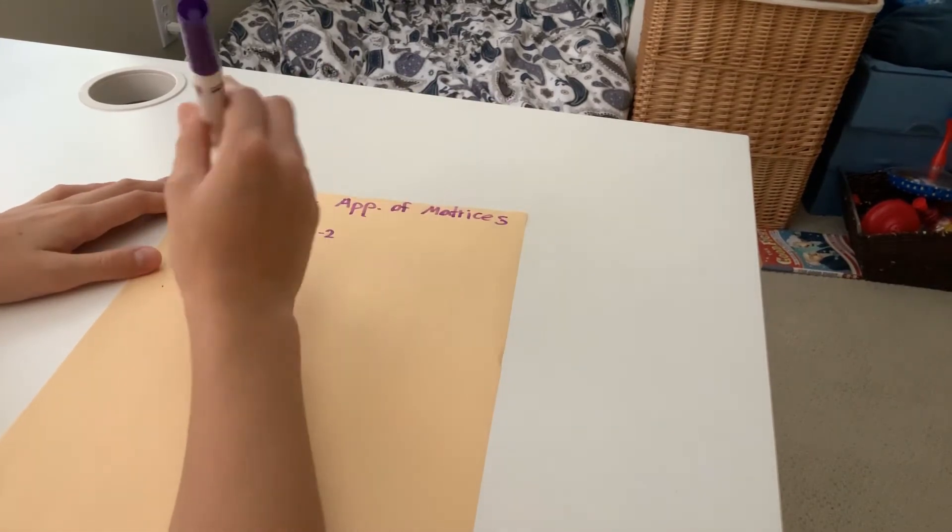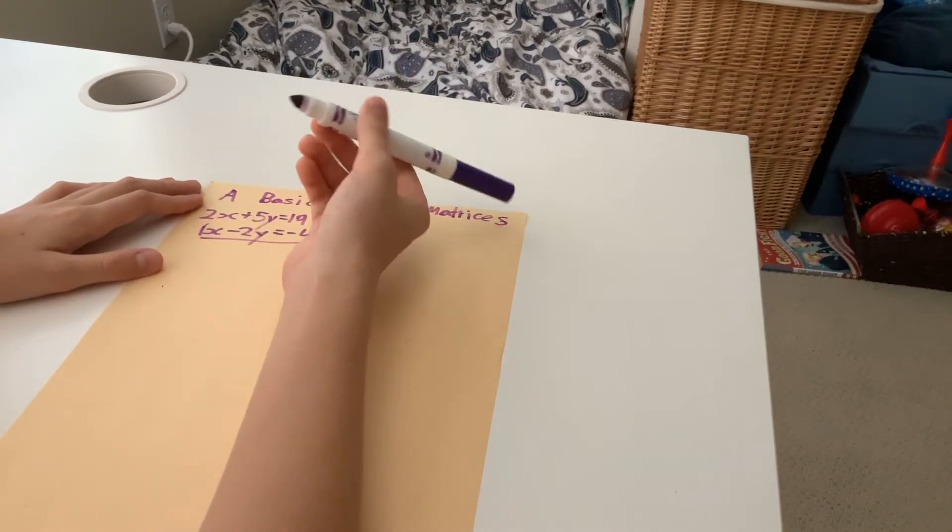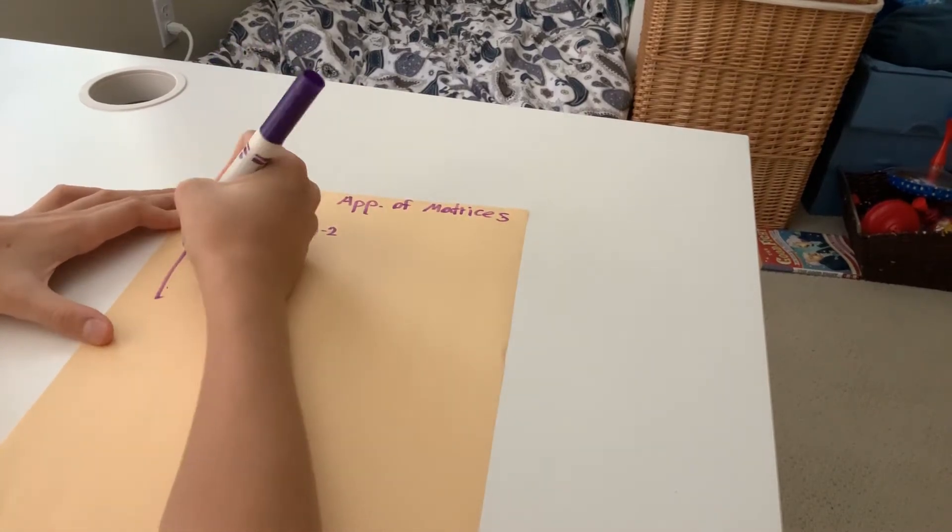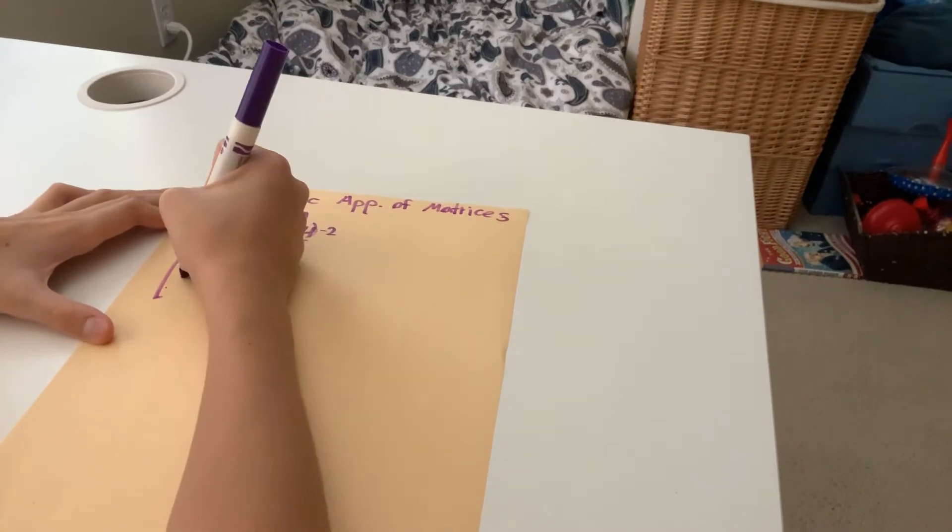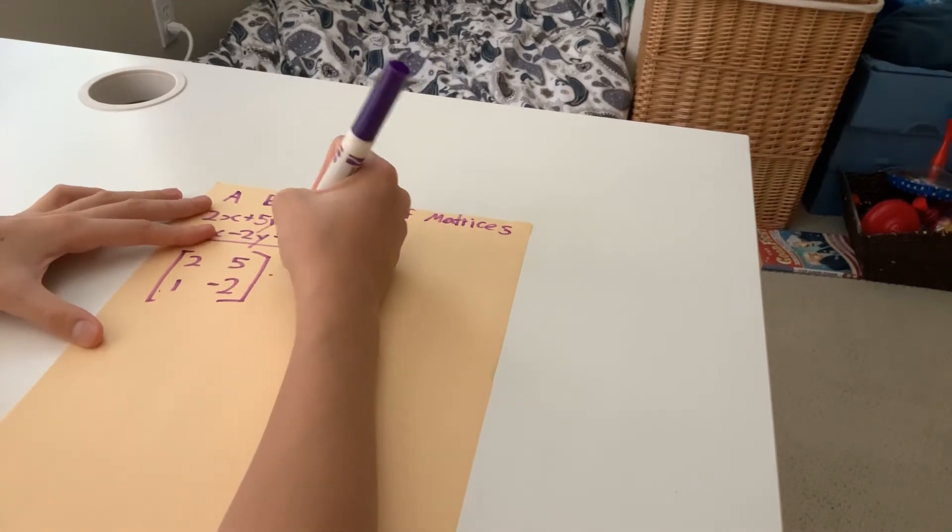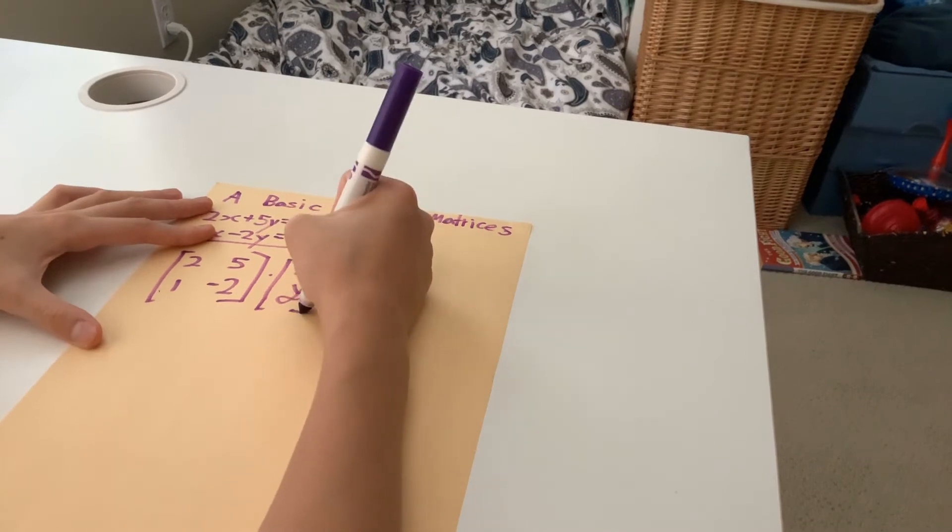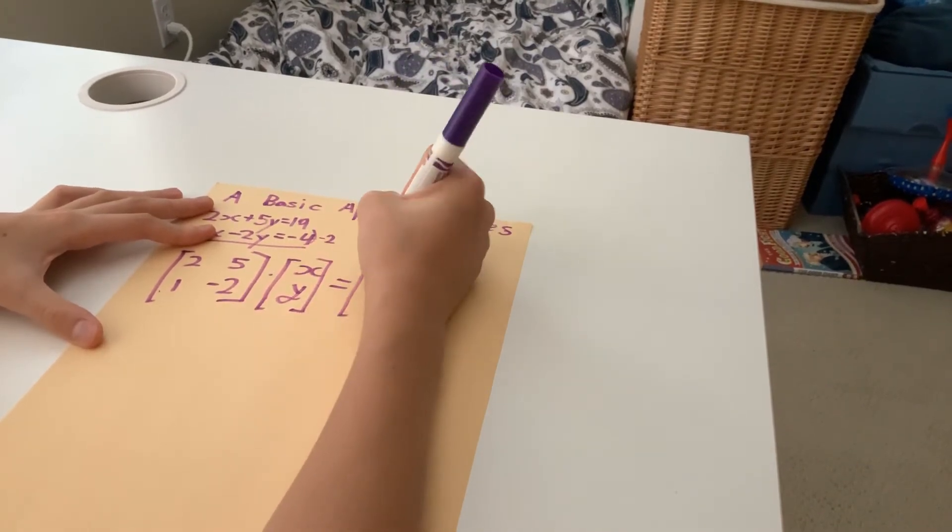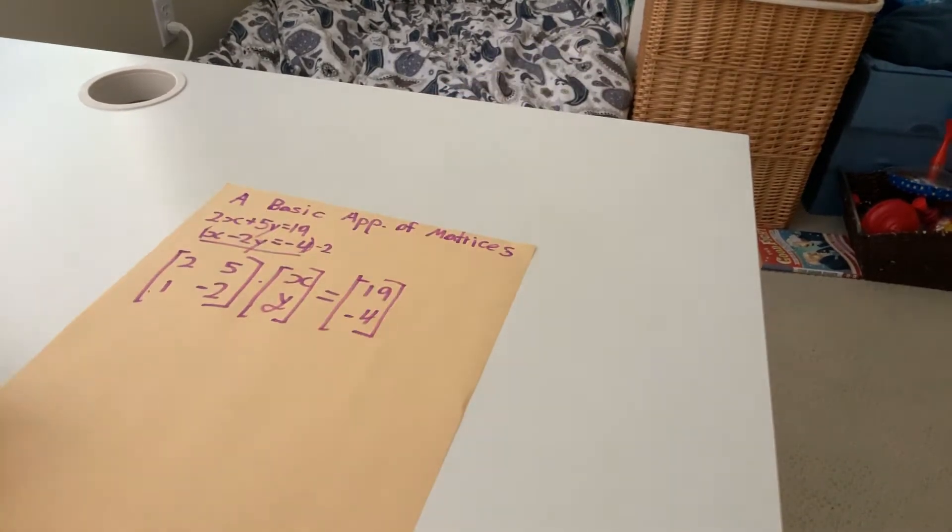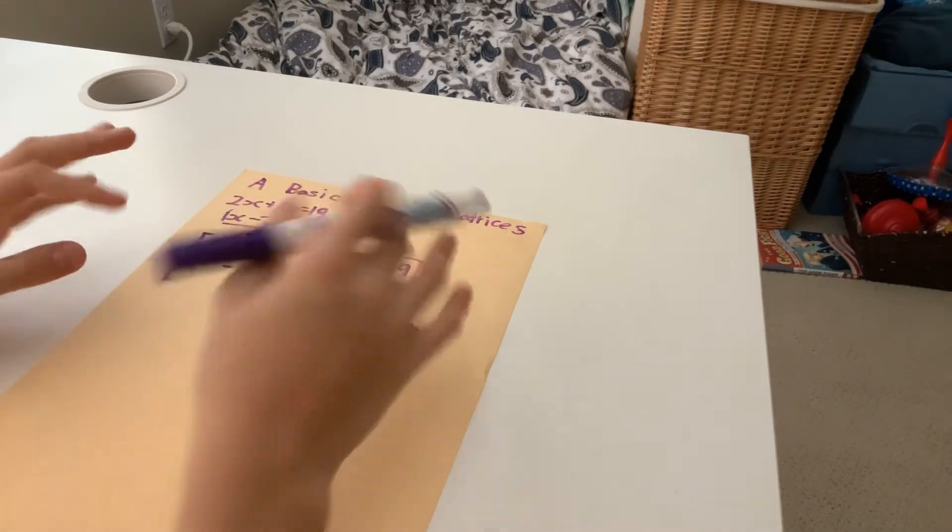So what you do first is you rearrange this data, there's a secret one here, inside of a matrix. So let's do that real quick. So 2, 5, 1, and negative 2, just like that. And then this can be multiplied by x over y and set that equal to 19 over negative 4. Okay, and that is our rearranged data into three matrices.